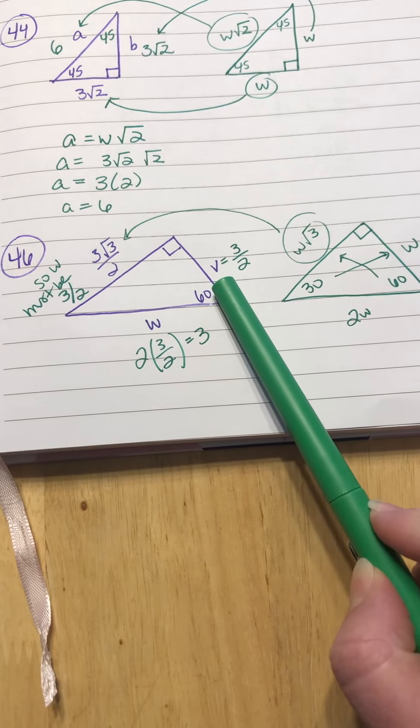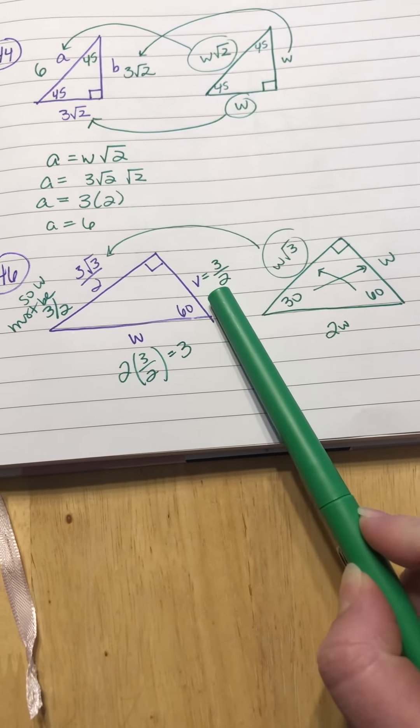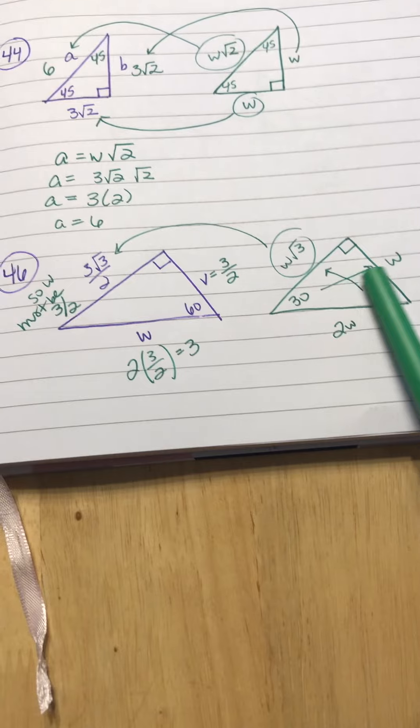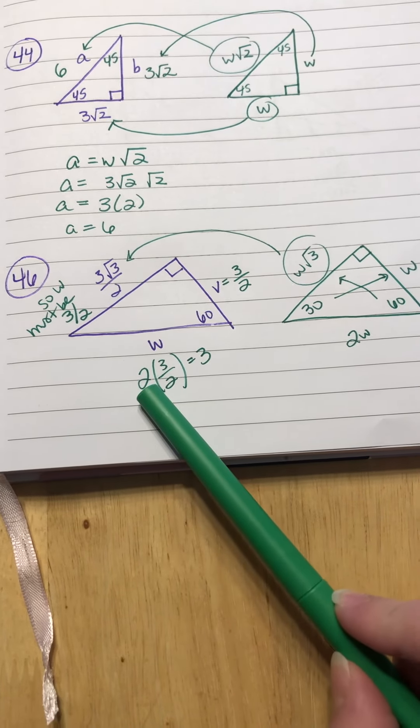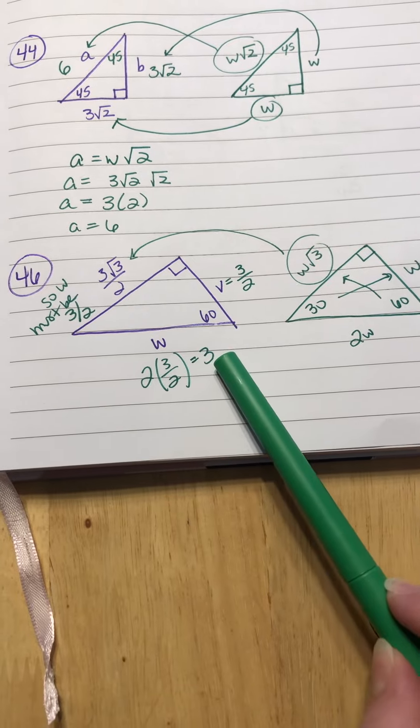So that means that this side, the V side, is your 3 over 2, because that would be our W side, and then the hypotenuse is 2 times that. So 2 times 3 over 2 is just 3.